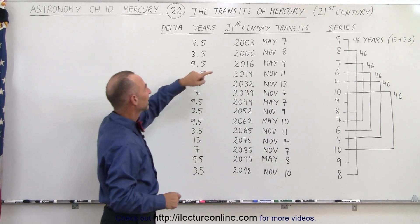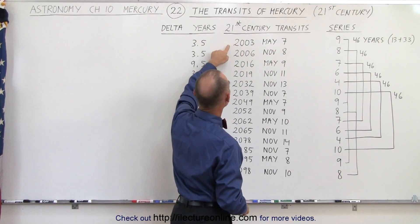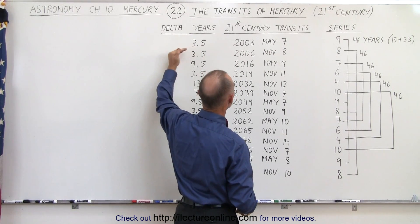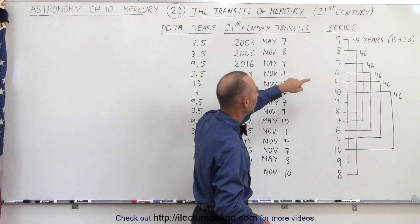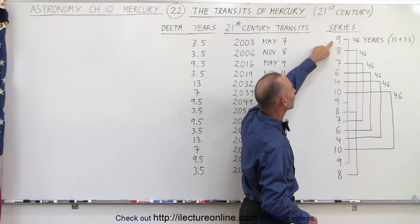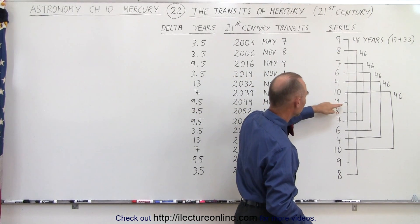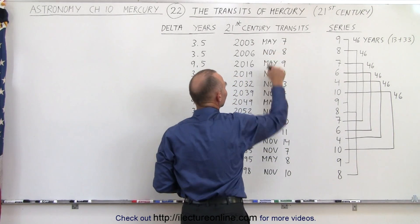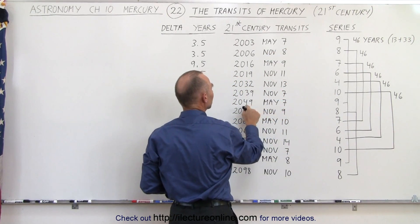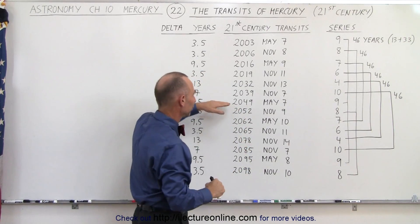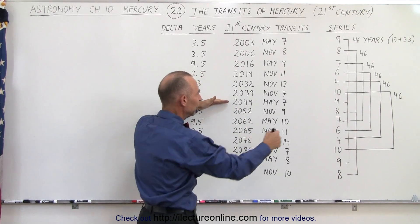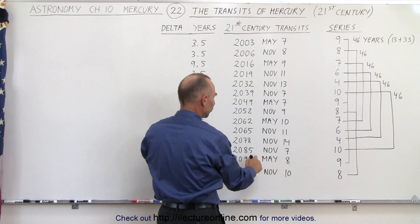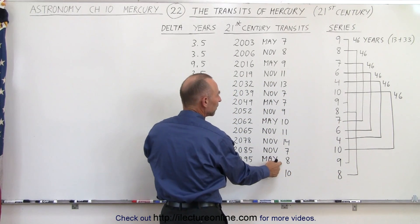Notice that on May 7, 2003, we had a transit. That was 3½ years after the previous transit, which was at the end of the previous century, and that was part of series 9. If you follow that down, here we have another transit in series 9, which also happened on May 7, but 46 years later — or will happen, as it hasn't happened yet. And then if you go down again, we have another transit in the same series, 46 years later, now on May 8.